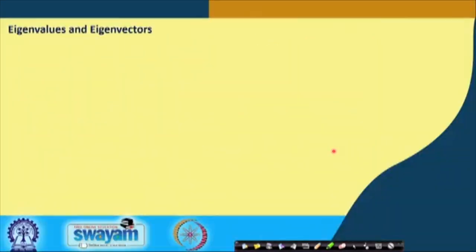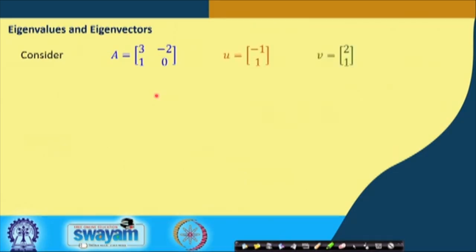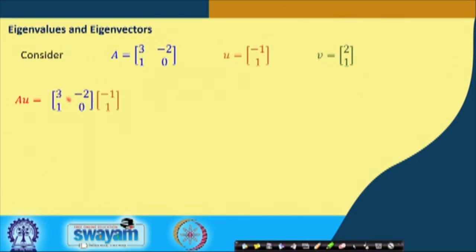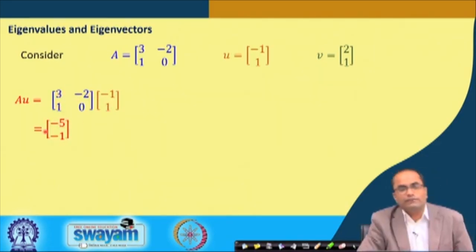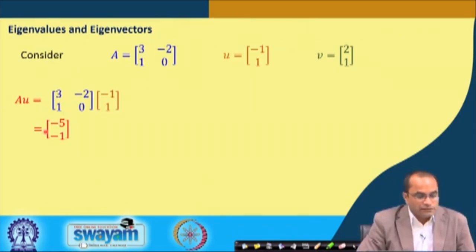Here, what are the eigenvalues and eigenvectors of a matrix? Let us consider this simple 2×2 matrix A given by [3, -2; 1, 0]. We consider two vectors: U = [-1, 0] and V = [2, 1]. If we compute the product A times U, we get [-5, -1].